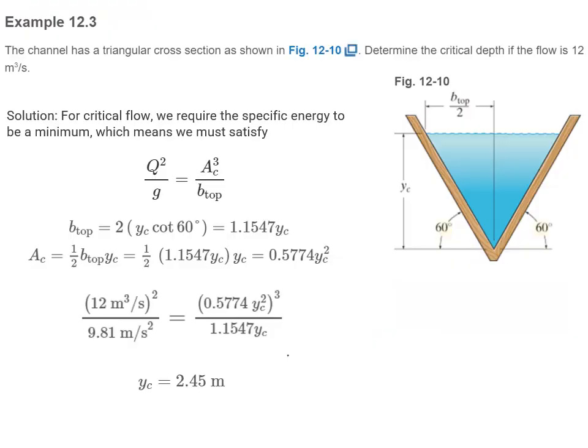Example 3 involves a non-rectangular (triangular) cross-section. We want to determine the critical depth for a flow of 12 cubic meters per second. Using the equation Q²/g = A_c³/B_top, the top width B_top is found using trigonometry, and the area is one-half base times height (since it is a triangle). Substituting into the equation gives the critical depth.